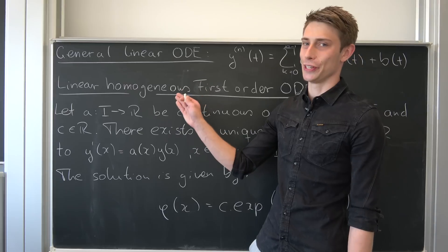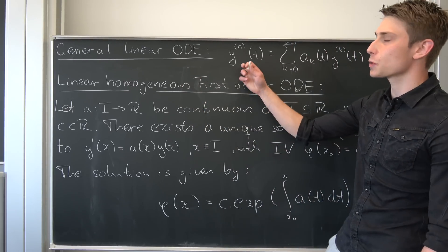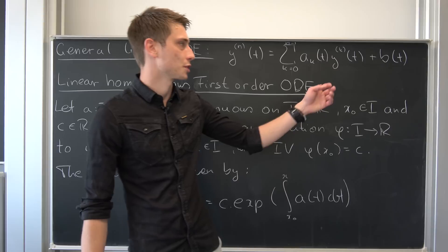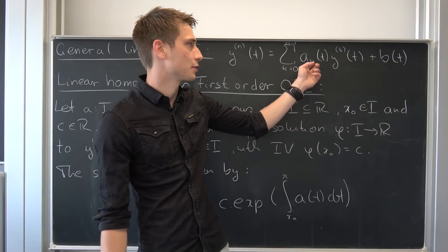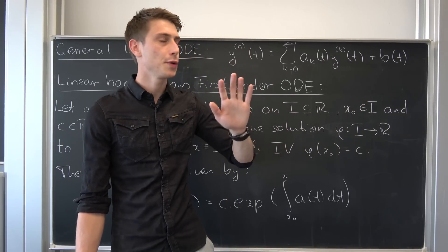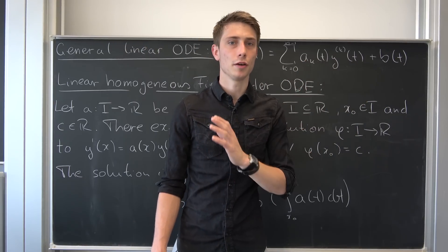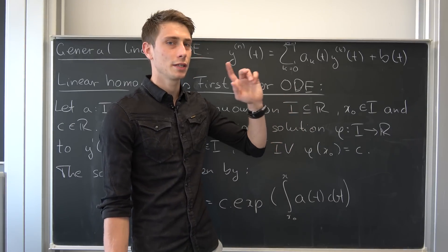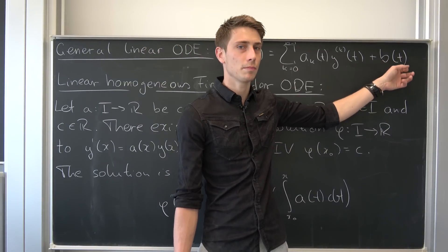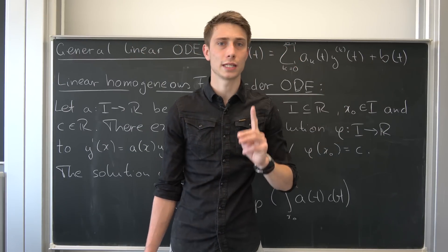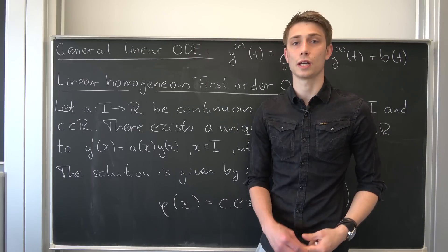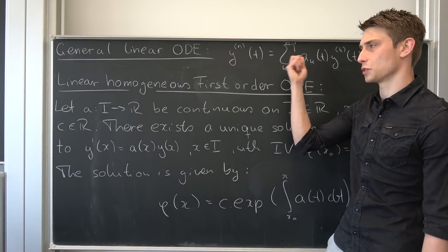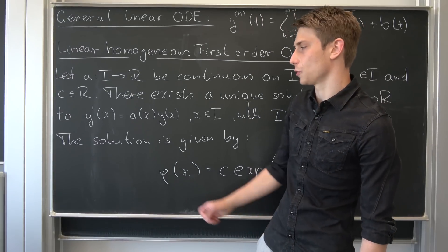First, let's take a look at general linear ODEs. On the left-hand side we have the nth derivative of y, and on the right-hand side we have linear combinations of solutions — we have y, and also this a and b. Note that a and b don't need to be functions of t; they can also be numbers like e or four. The key thing: if b is non-zero, we are dealing with the inhomogeneous case; if b is zero, we are dealing with the homogeneous case. Today we look at the homogeneous, first-order case — that means we have the first derivative of y.